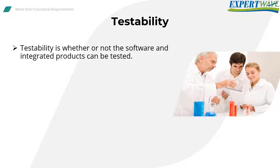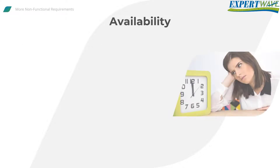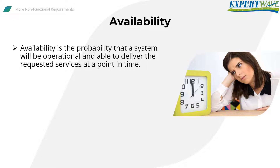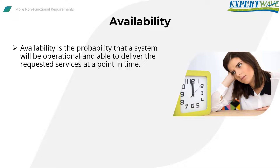The next three quality attributes are closely related: availability, reliability, and robustness. Availability is the probability that a system will be operational to deliver the requested services at a point in time. Availability is expressed as the percentage of time the infrastructure, system, or solution remains operational under normal circumstances to serve its intended purpose.